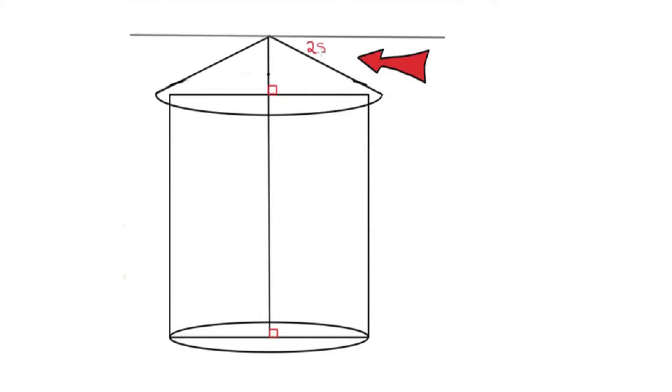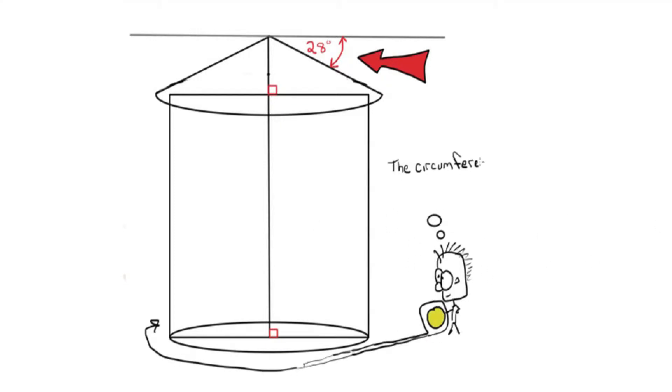Mac knows that the roof makes an angle of 28 degrees with a horizon. He measured the circumference of the silo at 95 feet 3 inches.